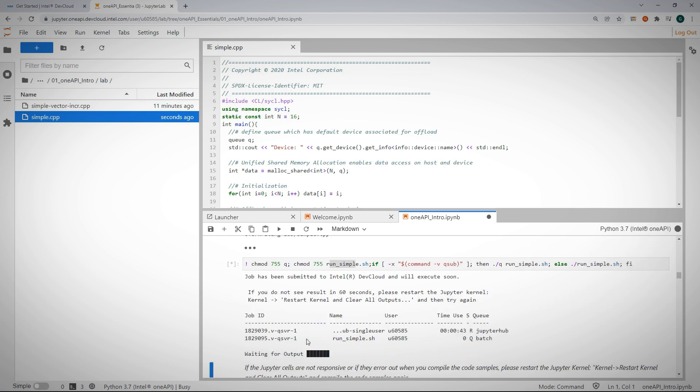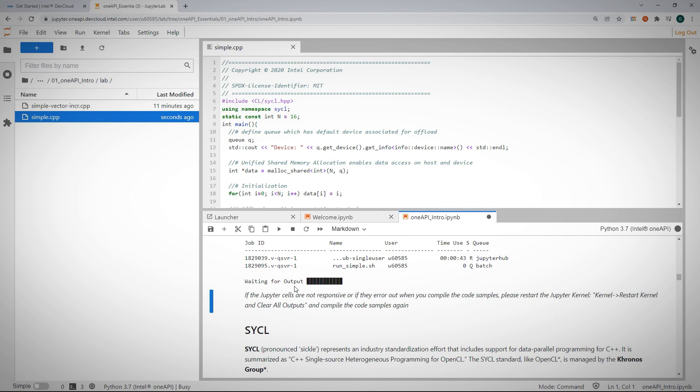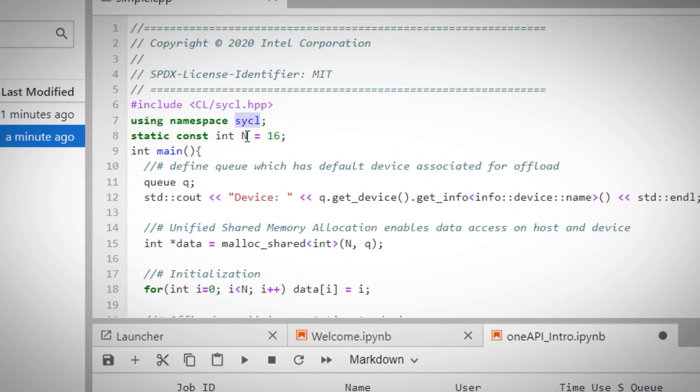Naturally, not everything will be fully understood, but bear with me. We are using SYCL, n is 16, and we have a queue.